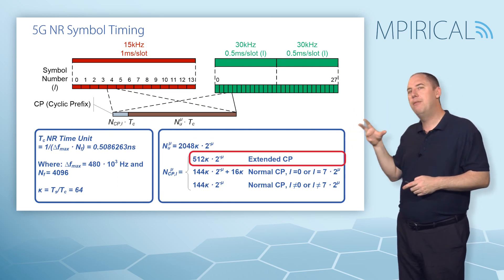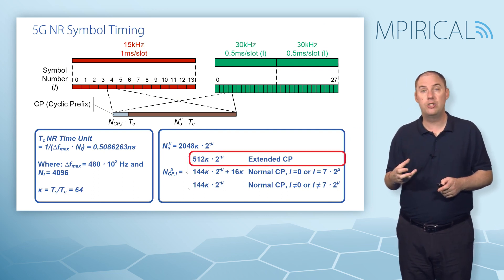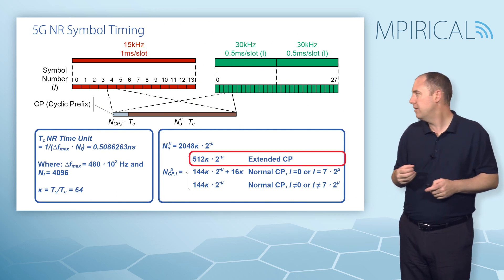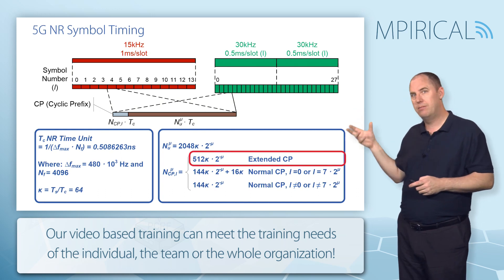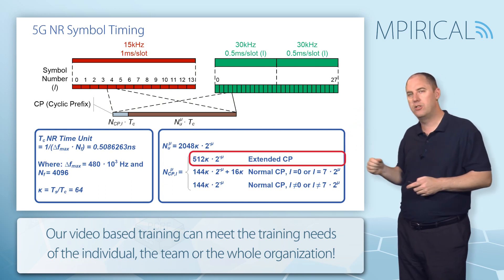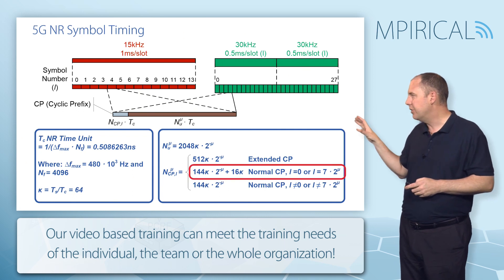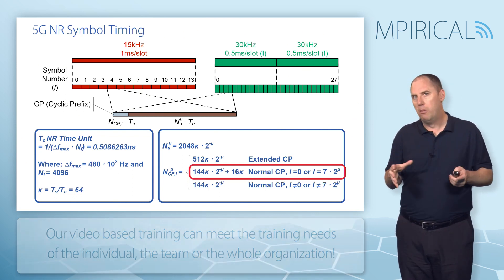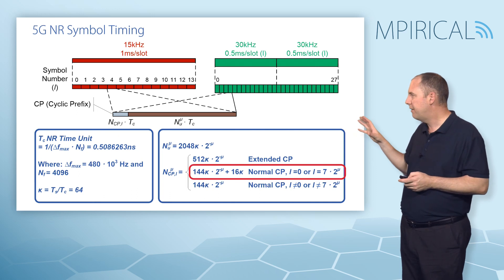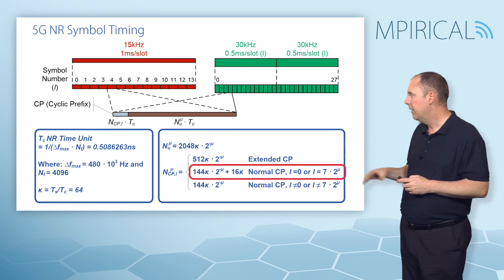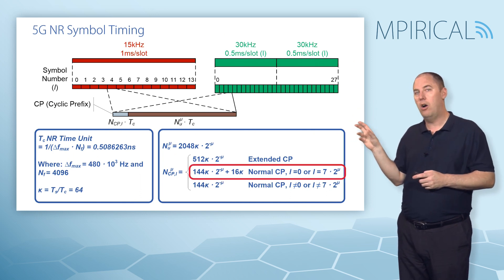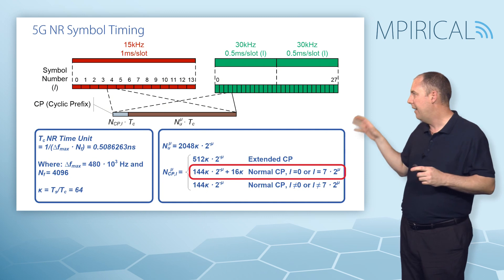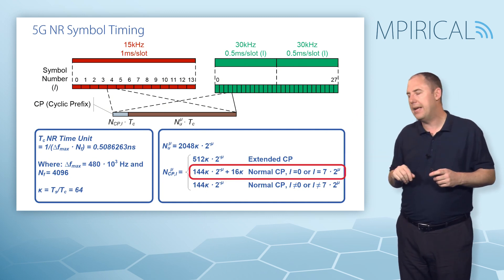There are different cyclic prefix options. If the numerology is 2 at 60 kilohertz, we can use an extended cyclic prefix — expressed as 512 times kappa times 2 to the power of minus numerology. There are also two other equations for the normal cyclic prefix. I'm not going to go into the finer detail of these because I'm going to visualize them on the next slide. Ultimately, this is the first cyclic prefix in the slot, and you also have one a bit later in the slot.